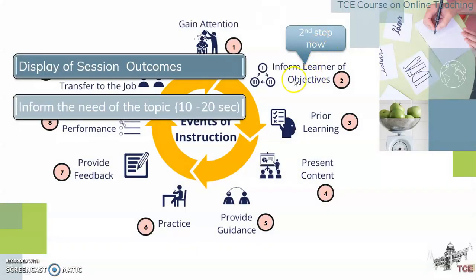The second step is informing learners of objectives. In this step, we shall display the session outcomes — as I have displayed at the start of this video lesson — and we should inform learners of the need for the topic. I demonstrated this with the unorganized and organized bookshelves. These things can be made as the second step.